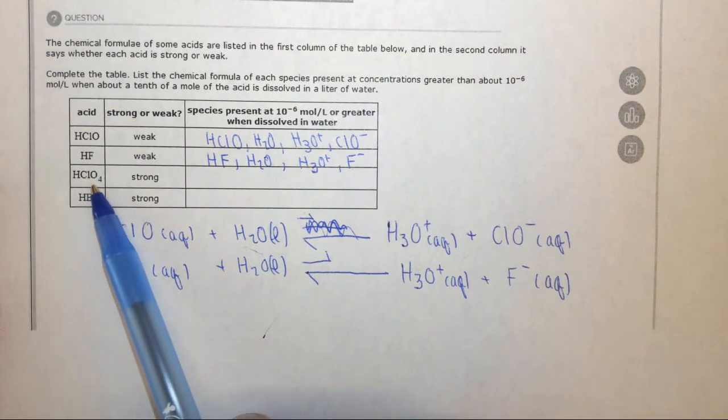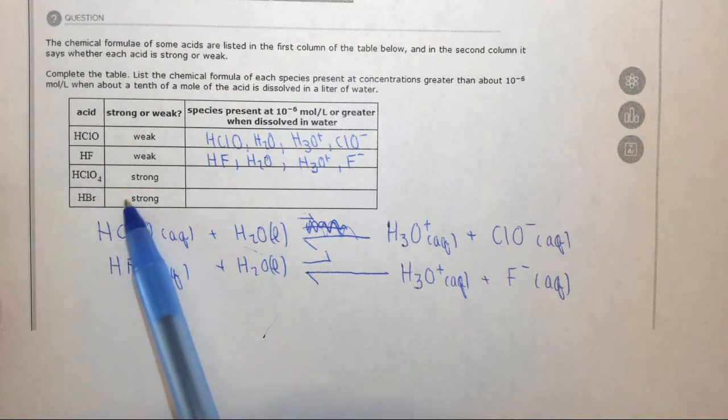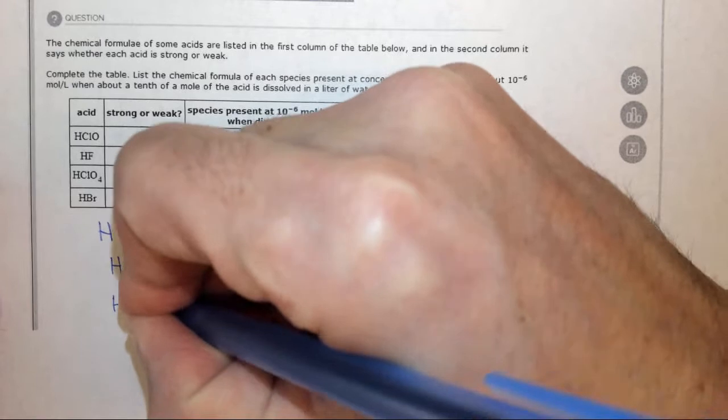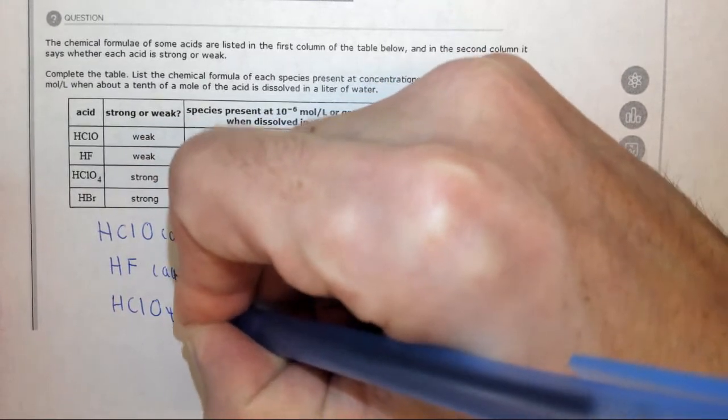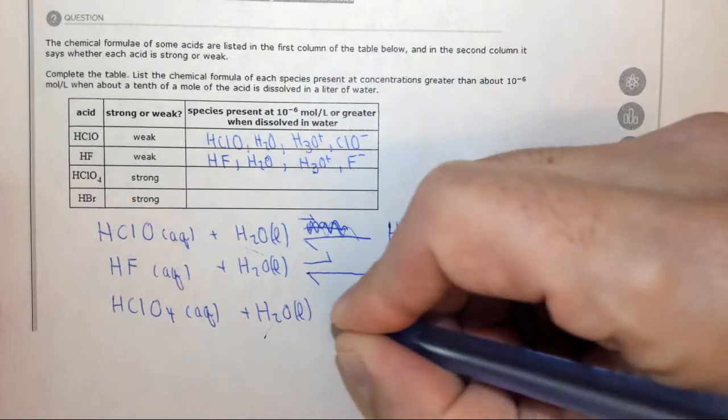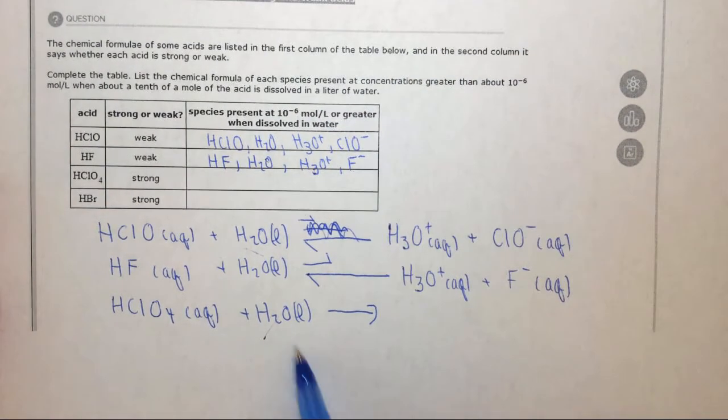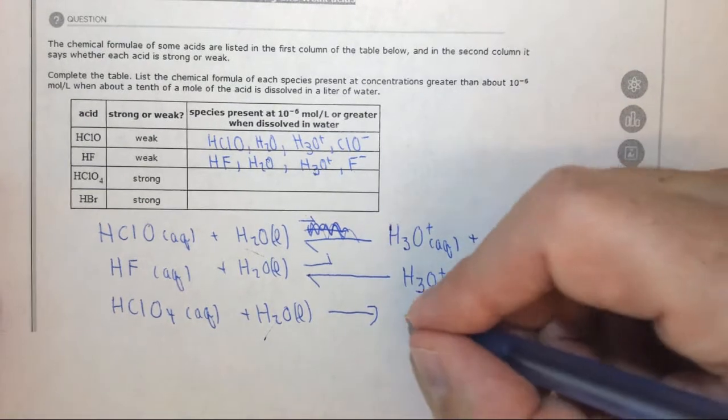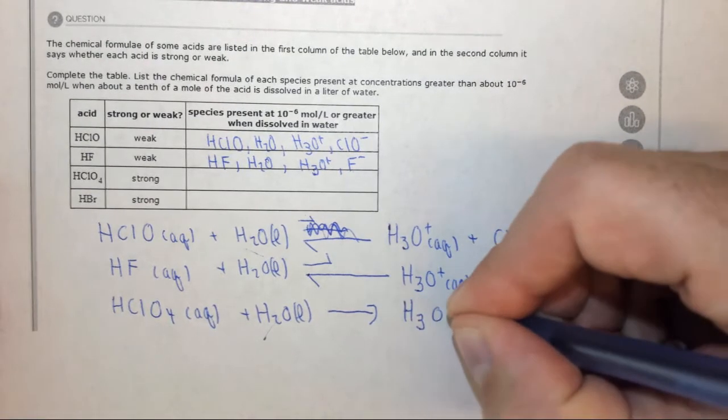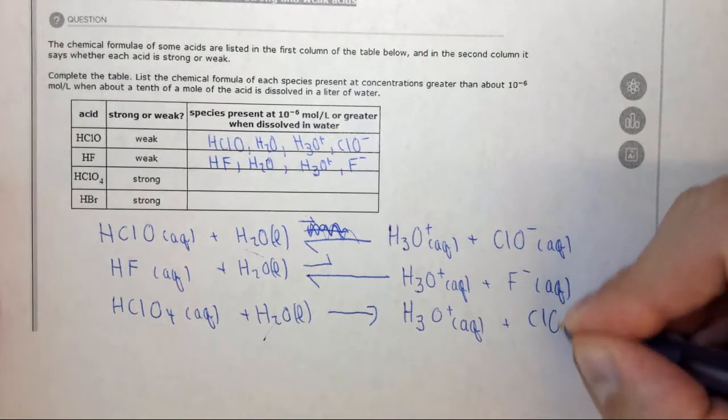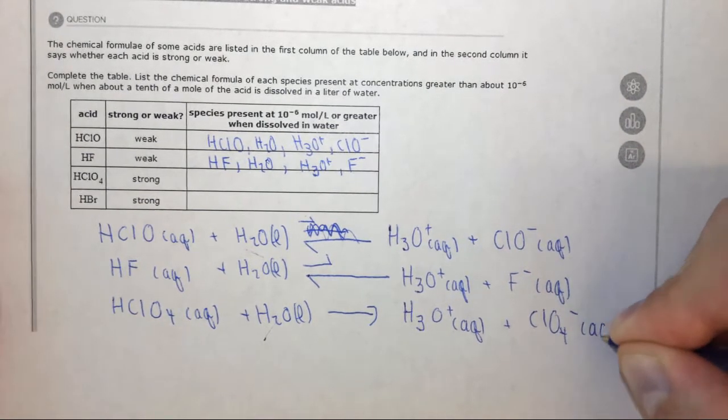Now we have a different case. We have perchloric acid, which is a strong acid, so we have HClO4 aqueous, and we add water liquid. In this case it's essentially not a reversible reaction, so it's a strong acid, so it goes nearly to completion, and we end up with H3O plus aqueous, plus ClO4 minus aqueous.